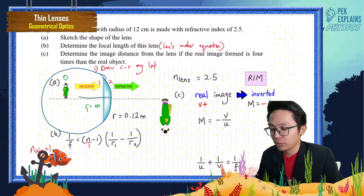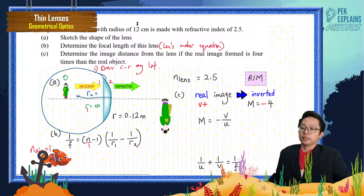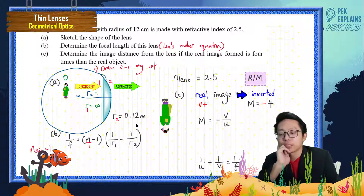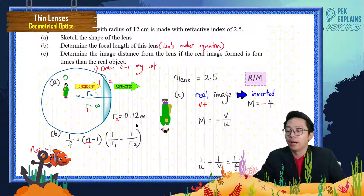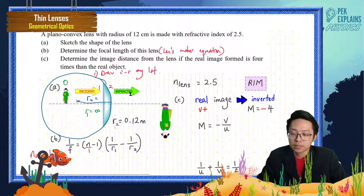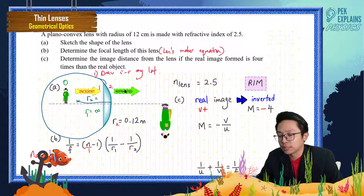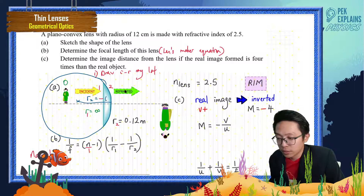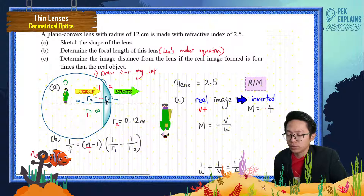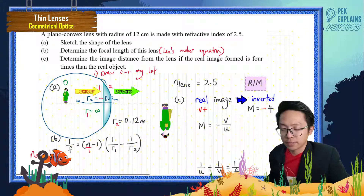Radius R2 is to the left. The question says the radius is 12 cm, which refers to the convex surface, so R2 is 0.12 m. Now compare R2's direction with the refracted ray — R2 is on the opposite side to the refracted ray, so R2 is negative: R2 = −0.12 m.